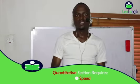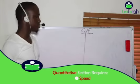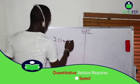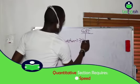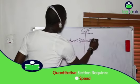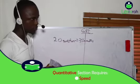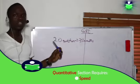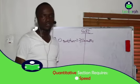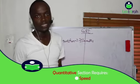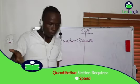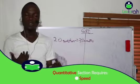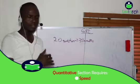The second requirement is speed, because the GRE is a timed test — you have 20 questions for 35 minutes in the quant section. This gives an average of 105 seconds per question. Some questions will take less than 105 seconds while others will be more difficult and require more time, but you want to target working at a pace faster than that average.